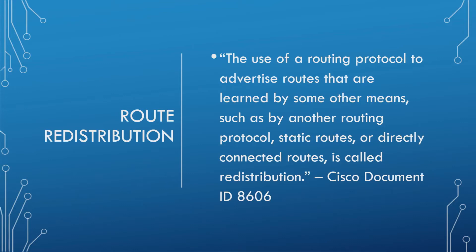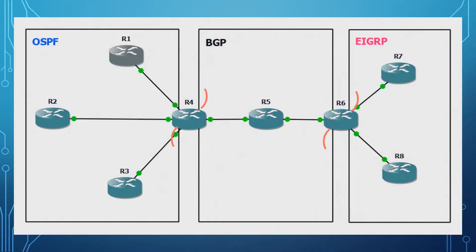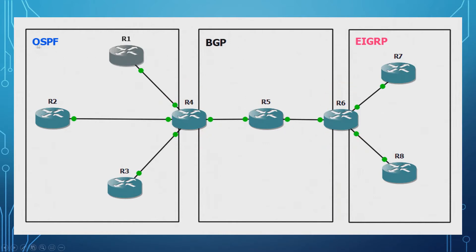Firstly let's cover off on what route redistribution is. To quote directly from Cisco document 8606: the use of a routing protocol to advertise routes that are learned by some other means, such as by another routing protocol, static routes, or directly connected routes, is called redistribution. Essentially it's where you have two or more routing protocols or sources of routing information on a device and you send that information from one source into the other.